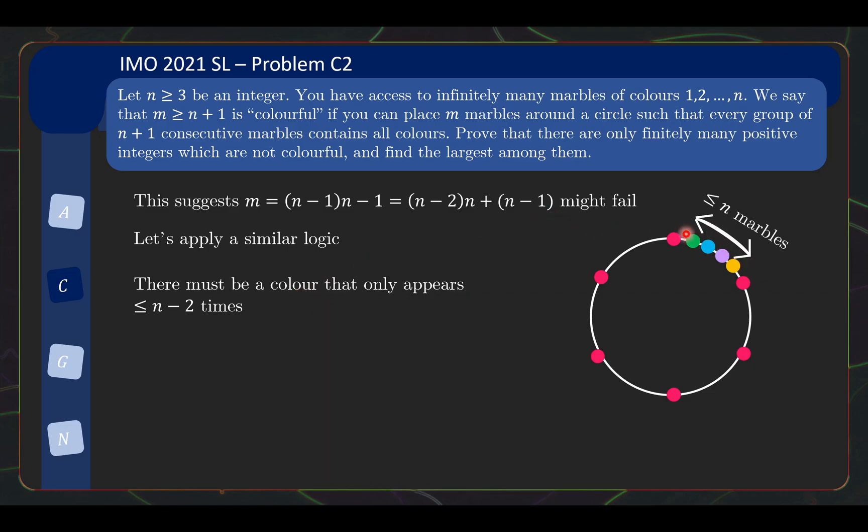Well, in between any two consecutive rare colors, let's say the rare color is red. So in between any two consecutive red marbles, there can be only at most n marbles. Because once you have n plus 1 marbles, then the stretch will not have red, and it will contradict the requirement over here. So at most n marbles in between every two red marbles.